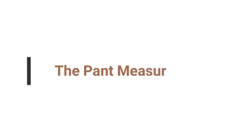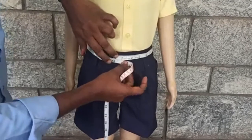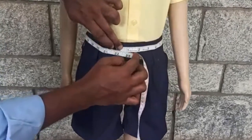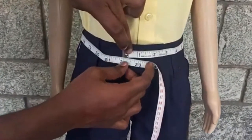For the pant measurement, there are two main measurements to take. The waist: take the tape measurement around the waist area, preferably where your child wears his or her pant.